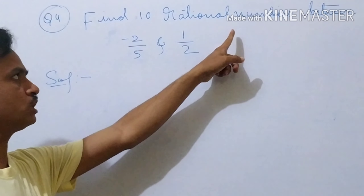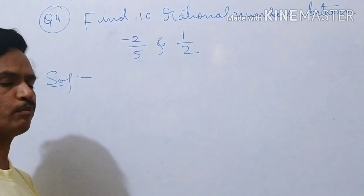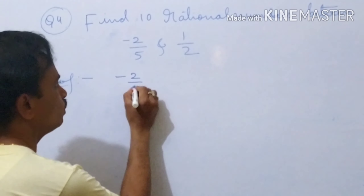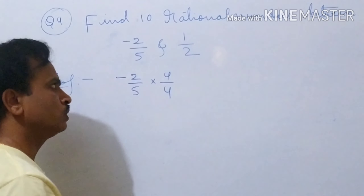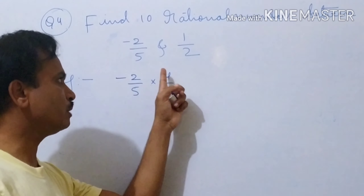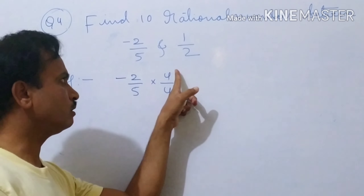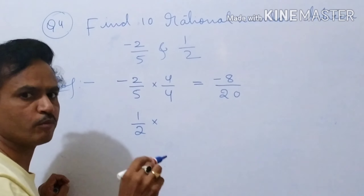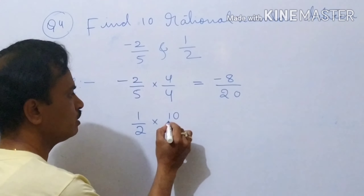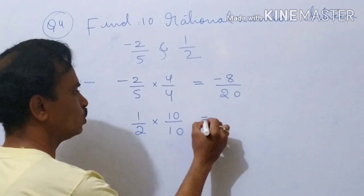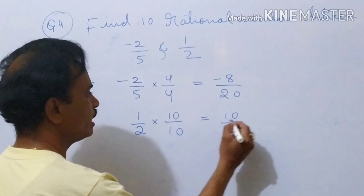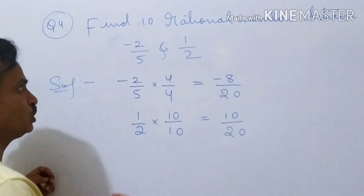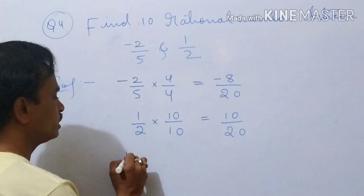Question number 4: find 10 rational numbers between minus 2 by 5 and 1 by 2. So for minus 2 by 5, multiply by 4 by 4 — we can take any number but I am using 4 by 4. Multiplying and dividing by the same number makes no difference, so this is equal to minus 2 into 4 is minus 8, divided by 5 into 4 is 20. Then for 1 by 2, we want denominator 20, so multiply by 10 by 10: 10 into 1 is 10, divided by 2 into 10 is 20.